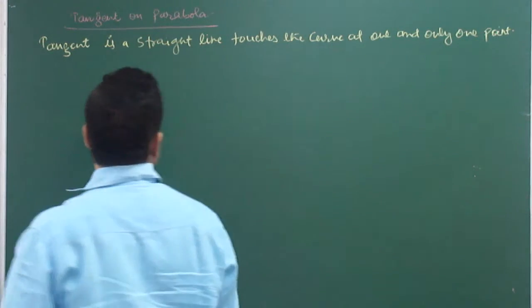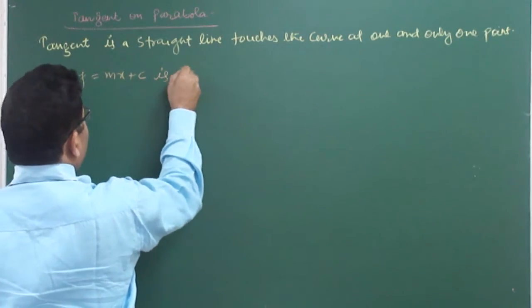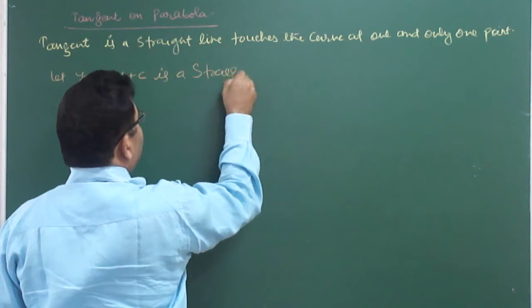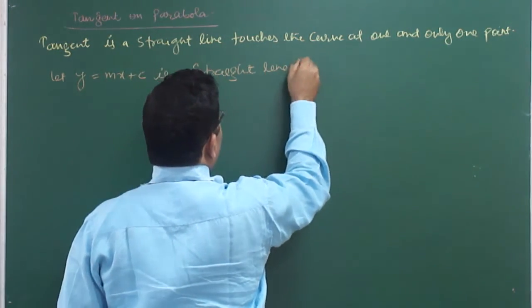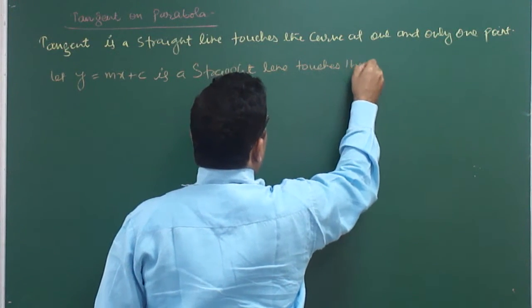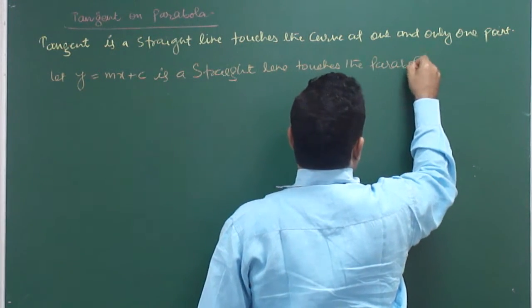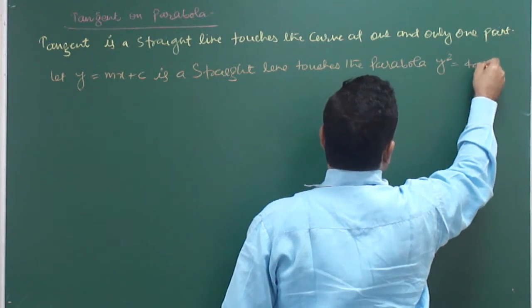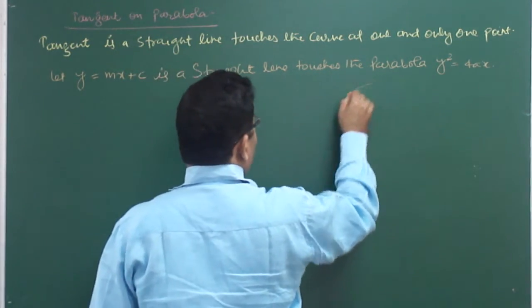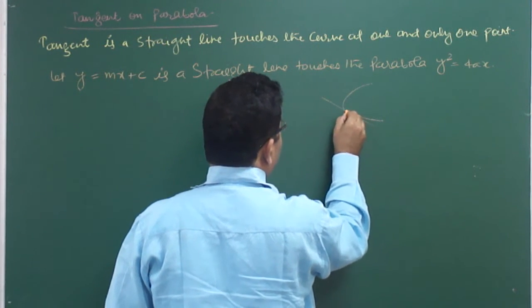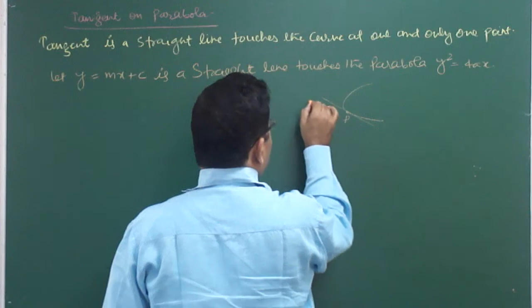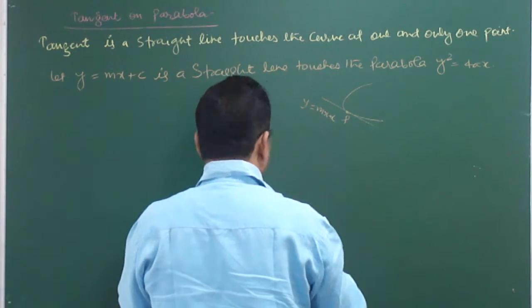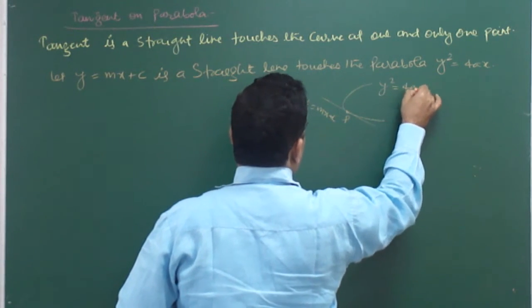Tangent is a straight line. So let y = mx + c, which is a straight line. This line touches the parabola y² = 4ax. If there is any parabola and this is a line which touches at point t, this line is y = mx + c and the parabola is y² = 4ax.